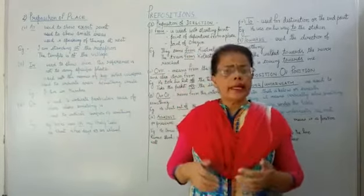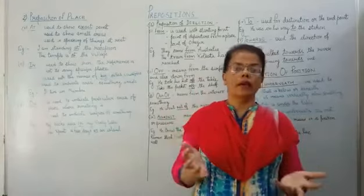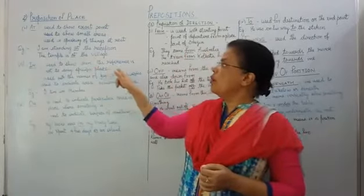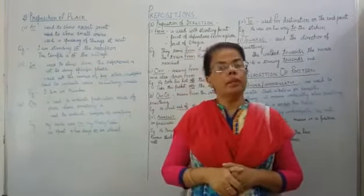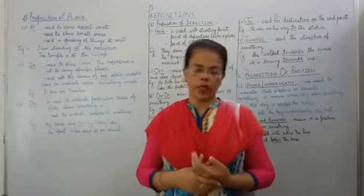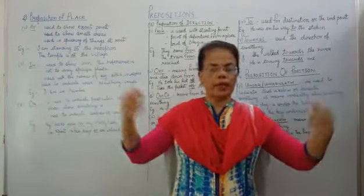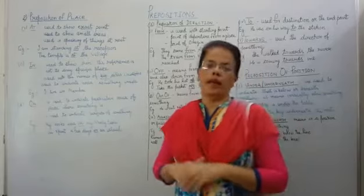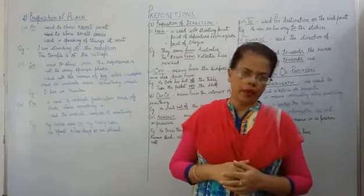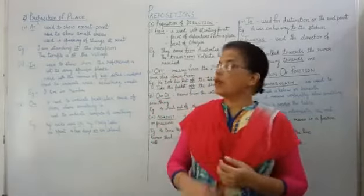Next is 'in'. It is used to indicate the inside, the interior of something — that is the area inside. It is used to show when the reference is not in a specific place. Something can be anywhere within that large area. Second, it talks about bigger areas — cities, countries. For example: I live in India. I lived in Mumbai for 10 years. So when talking about bigger cities or countries, we use 'in'.